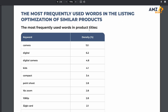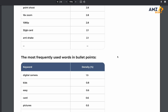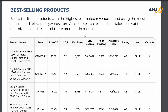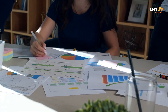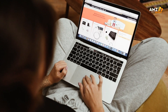Speaking of optimizing your listing, the next section — most frequently used words in the listing optimization of similar products — does a ton of legwork, showing you which keywords are used throughout your competitors' listings. What I like to do here is identify which keywords have the highest density percentage for the different sections and make sure to incorporate those first into my listing.